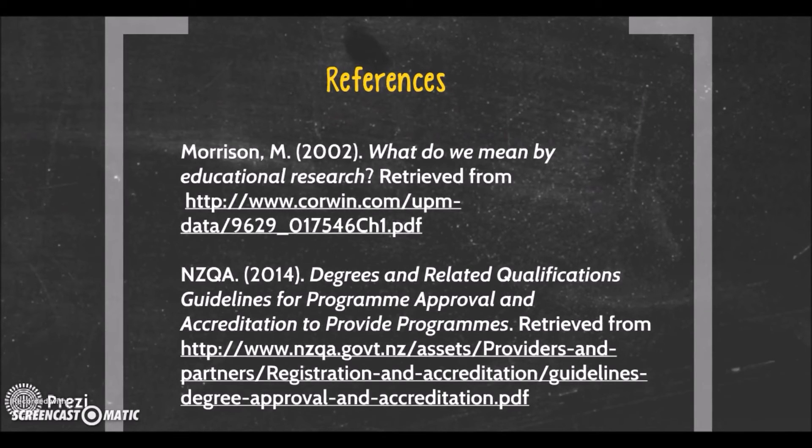I'll just wrap up by mentioning the references used in this presentation. Marlene Morrison's paper is quite interesting. It's called What Do We Mean by Educational Research? You can find it on the web. It's frequently misquoted as things often are. So people use secondary references. It gets cited as being in a book, which in fact is not in, but it is available on the web and it's quite a useful extract from a chapter. The other document used here is the NZQA document that talks about degrees and related qualifications. And that's got quite a lot of detail in it about how the NZQA and the TEC regard research within the context of teaching and learning.